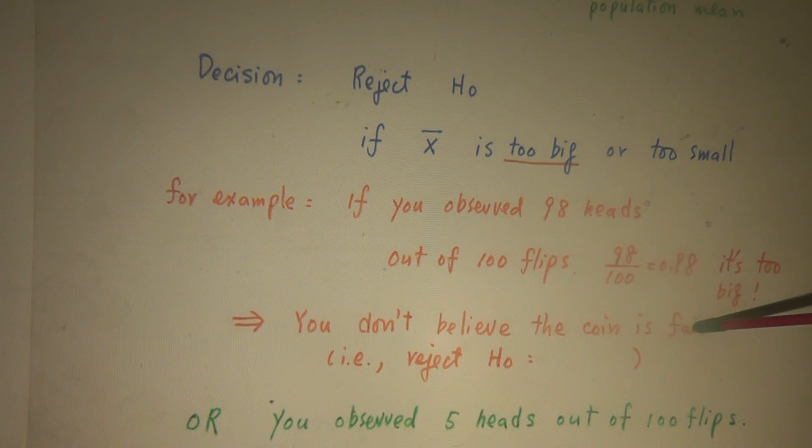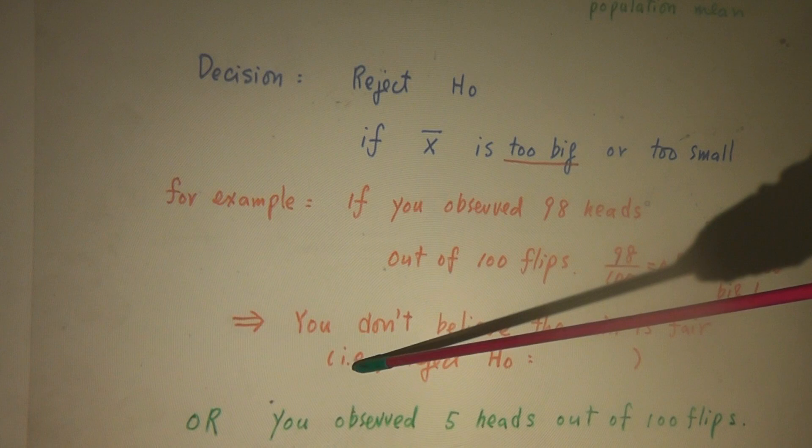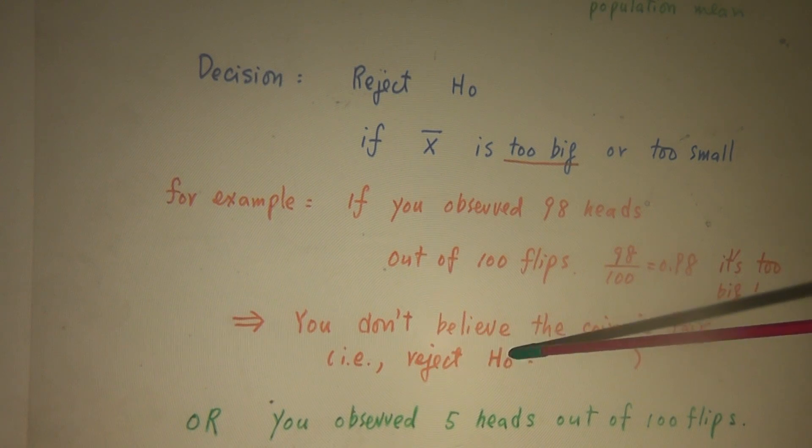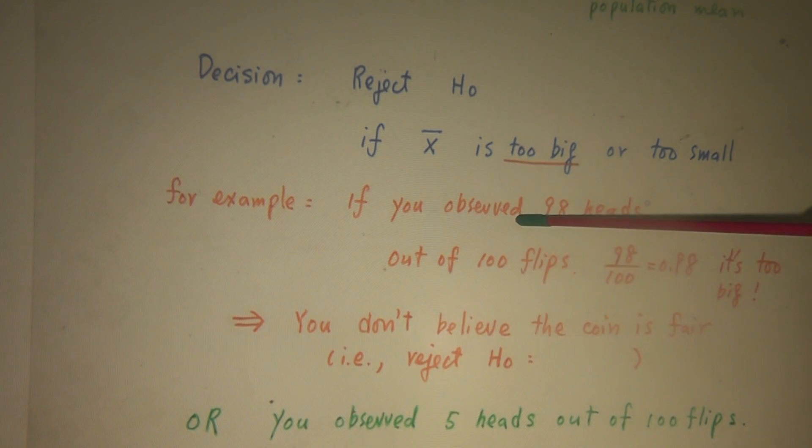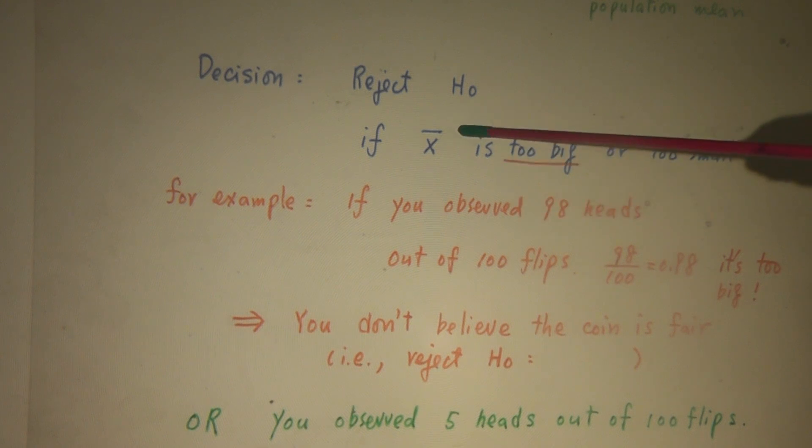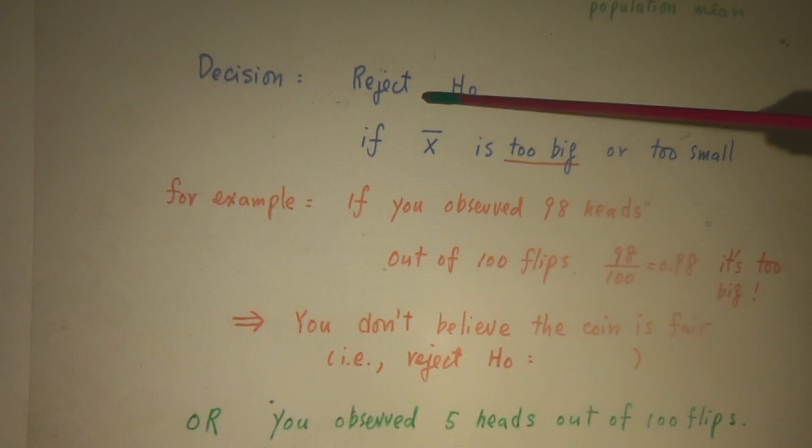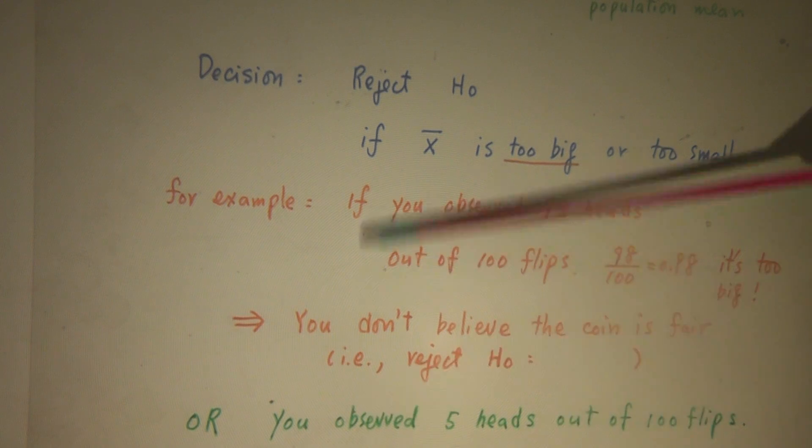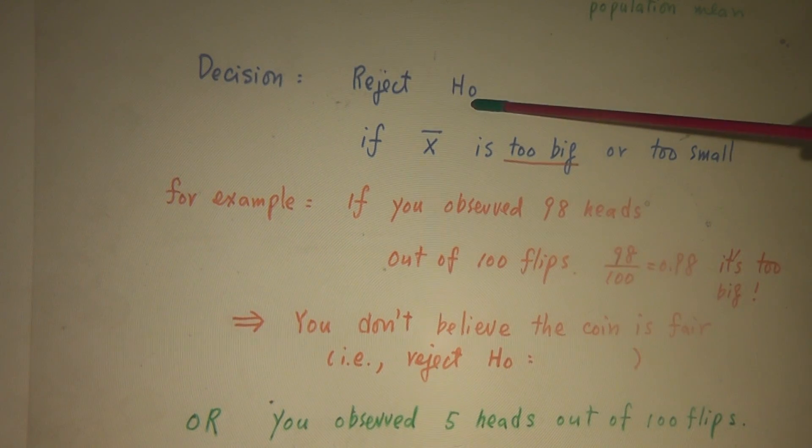That is to say I will reject H-naught. Look at here. When you collect the evidence, the evidence is more consistent with HA, not a fair coin, and not consistent with H-naught is a fair coin. Of course, you will have H-naught rejected. If collected evidence consistent with HA, not consistent with H-naught, of course you will have H-naught rejected.